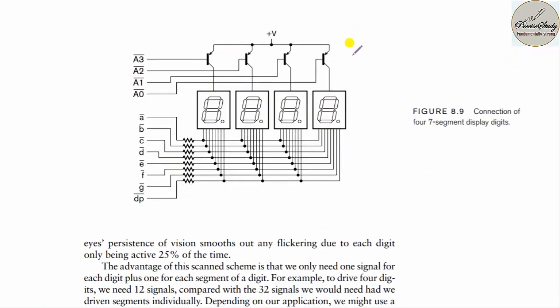Let us talk about 7-segment displays. In a previous lecture, I explained the working of a 7-segment display and how to display a character or number. We use common anode or common cathode configuration. In common anode, all LED anode terminals are shorted and connected to VCC. In common cathode, all cathode terminals are shorted and connected to ground, and you control the anode pins only.